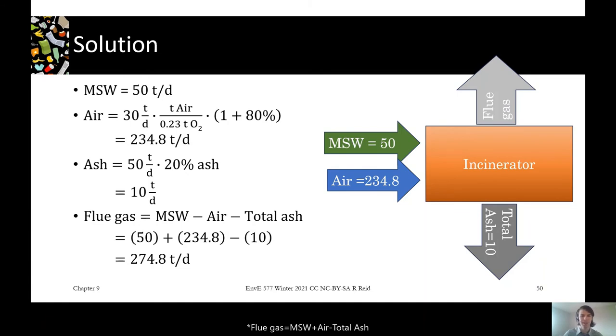For our solution, we can look at all the mass balances and see what we know and what we don't know. MSW in, we know it's 50 tons per day. The air, we were given the excess aeration requirement—30 tons per day plus 80% excess, and it was 30 tons of oxygen. To convert oxygen to total air,